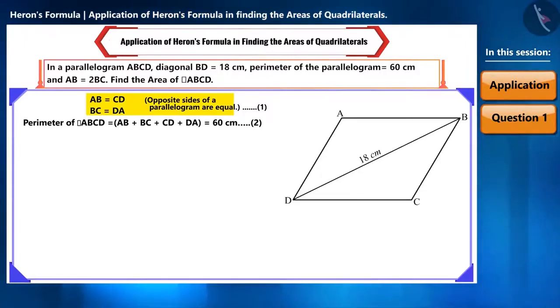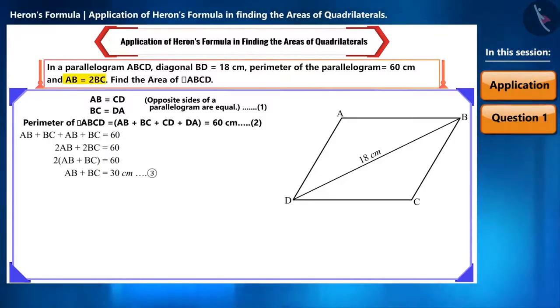Using equation 1, we can write equation 2 as follows. We will get AB plus BC equal to 30. We are given that AB is equal to 2 BC. In equation 3, in place of AB, we can write 2 BC. On doing so, we get the length of BC as 10 cm.